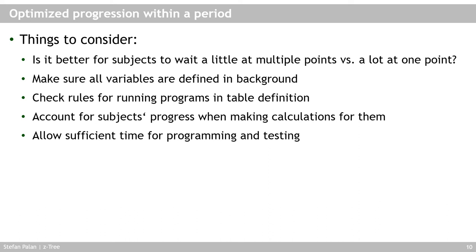Check the rules for running programs in the table definitions so they fit your experiment — look up the manual for details. Make sure you account for subjects' progress when making calculations for them, ensuring all decisions have been made before performing calculations. Finally, allow a lot of time for programming and testing these types of experiments, as they are much more error prone. Try out everything with different progression scenarios — subjects being faster or slower — and make sure it works under all circumstances.